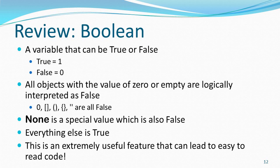A quick review of what Boolean is: a Boolean is a variable that is either true or false. In Python, true is 1 and false is 0. All objects with the value of 0 or that are empty are logically false — so 0 is false, an empty list, empty tuple, empty dictionary, and empty string are all false, and None is that special value which is also false.